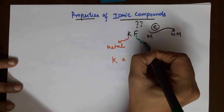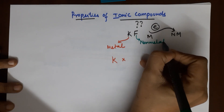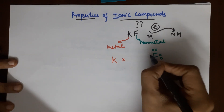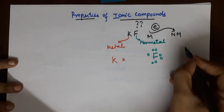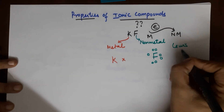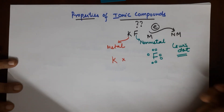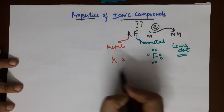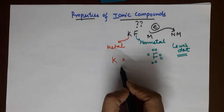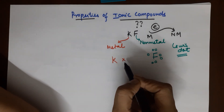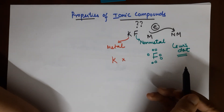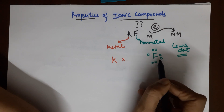Fluorine is the non-metal. The Lewis dot structure for fluorine shows seven electrons in the outermost shell. In case you're struggling with Lewis dot structures, please refer to my channel for that topic by Seema Makhijani and it will be cleared up. Now, how can potassium be stable? By completing its octet. How can fluorine be stable? Also by completing the octet.